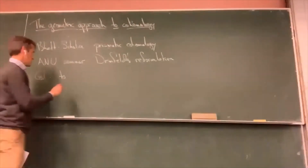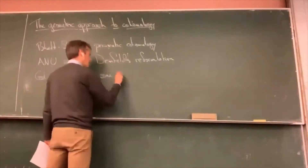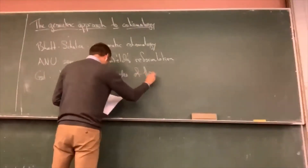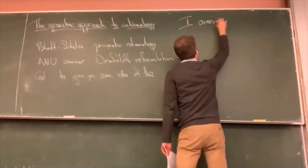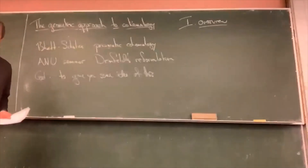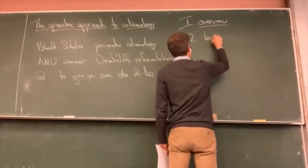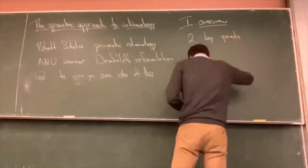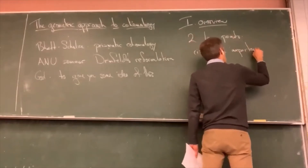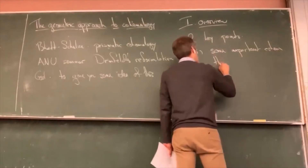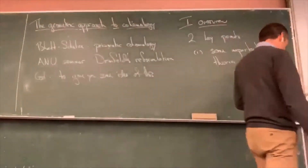The goal of our seminar is to understand it and the goal of this talk is to give you some idea of this. There are two key points I want to emphasize. The first one is that some important cohomology theories are just ordinary coherent cohomology — the cohomology of quasi-coherent sheaves, or cohomology of vector bundles — but over exotic spaces.